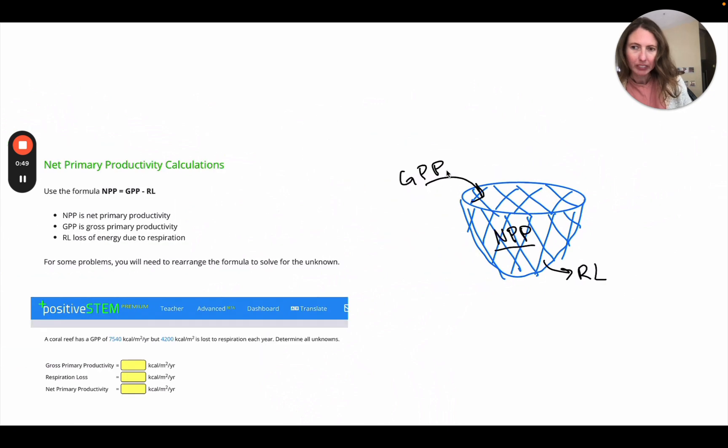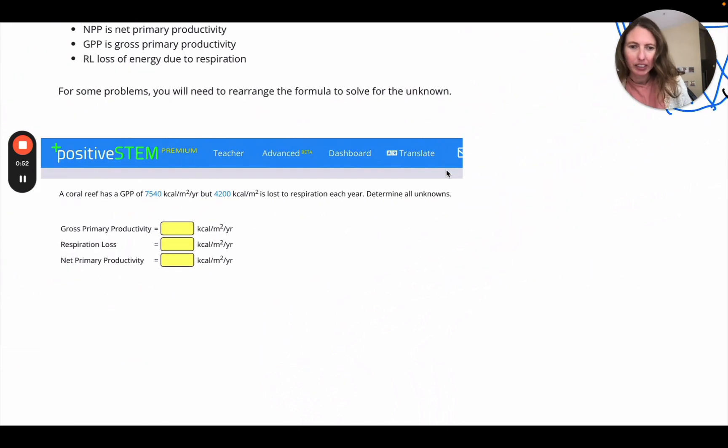So for the first problems, you're going to put in the values in the boxes. So for this one, a coral reef has a gross primary productivity of 7,540 kilocalories per meter squared per year. We're going to write that in the box.